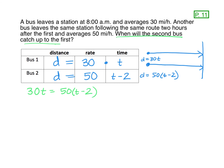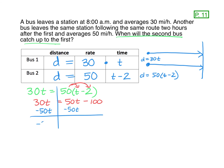Now we can do our algebra. Let's distribute: 50 times T is 50T, and 50 times negative two is negative 100. Let's solve for T. I want to move all my T's to the same side of the equal sign, so I'm going to subtract 50T on both sides. Now I have negative 20T equals negative 100. I'm one step away — let's divide by negative 20, and we get T equals 5.